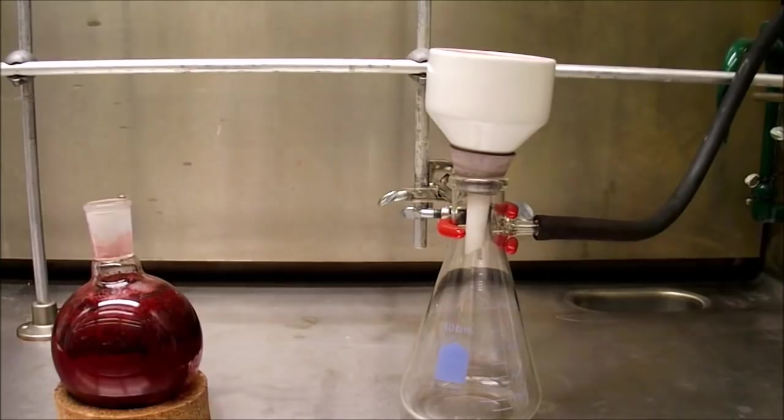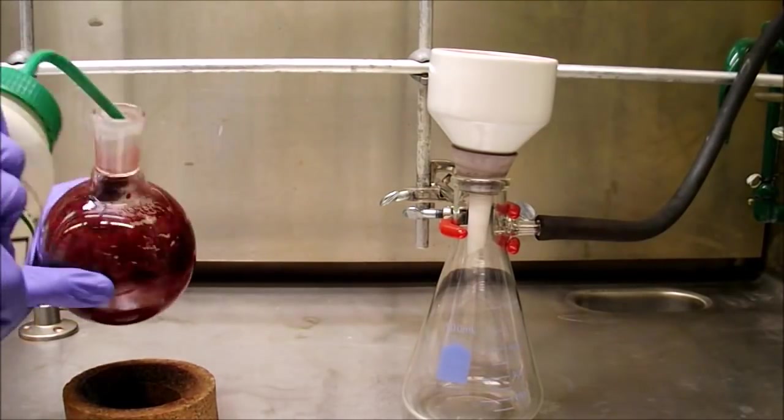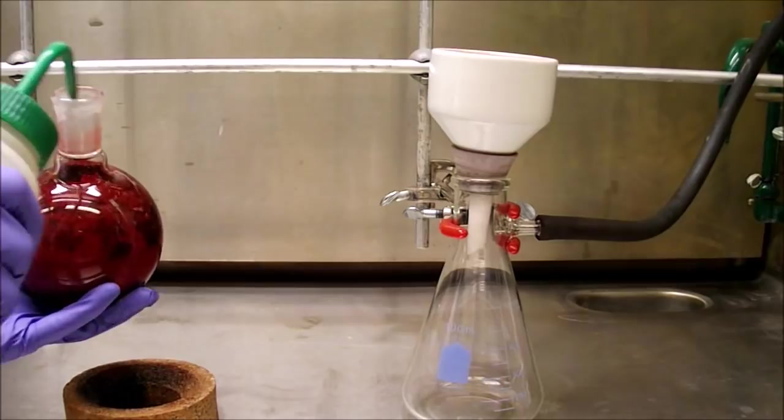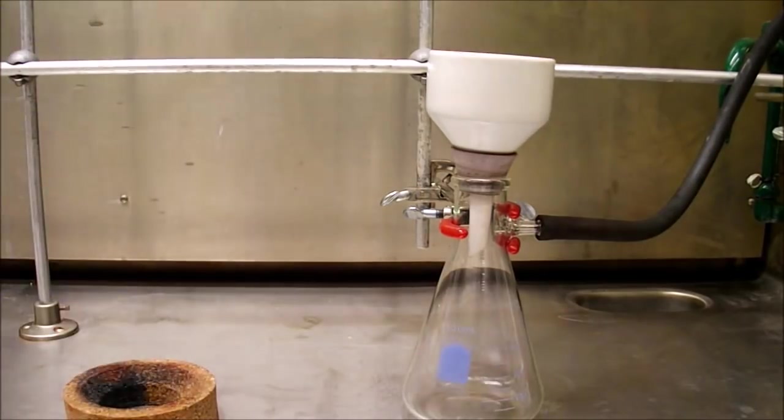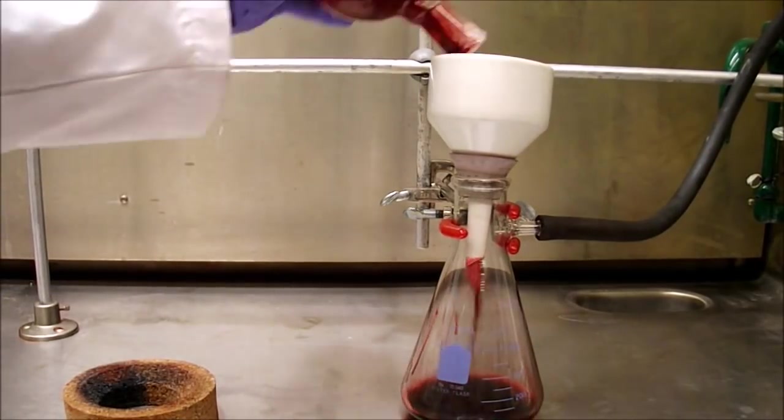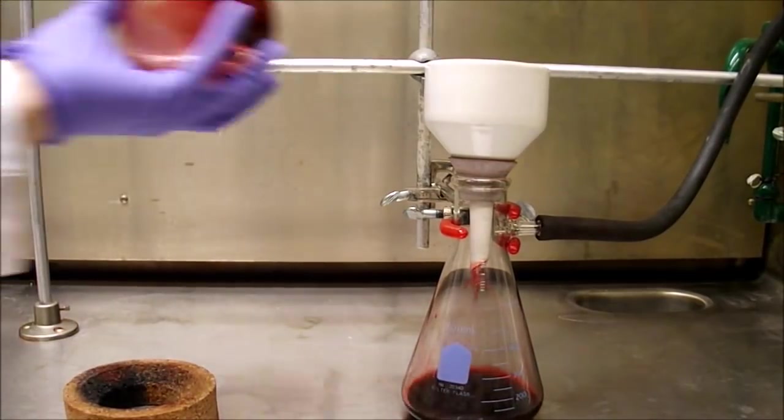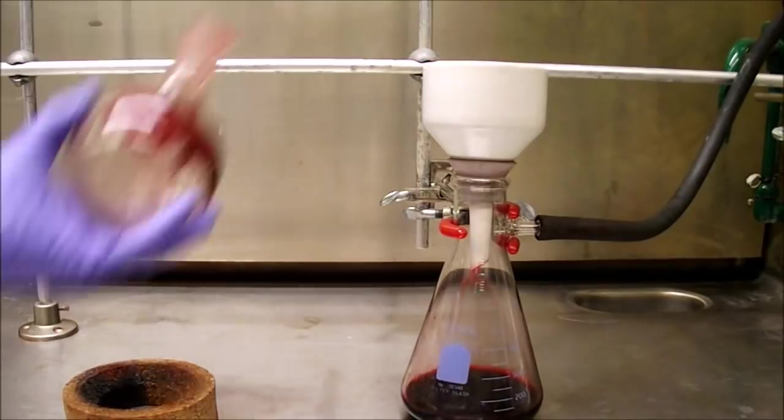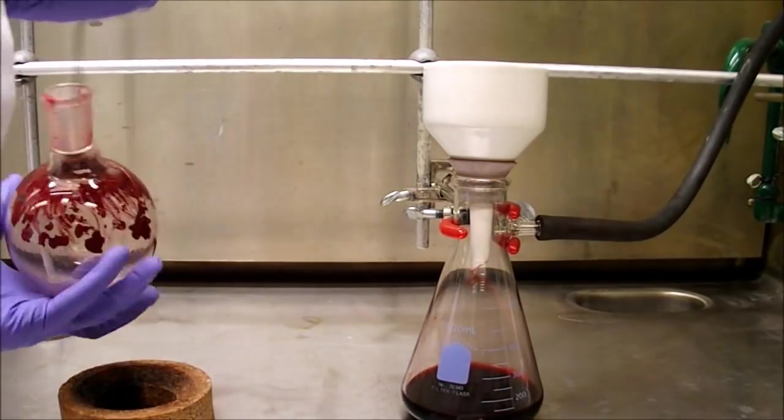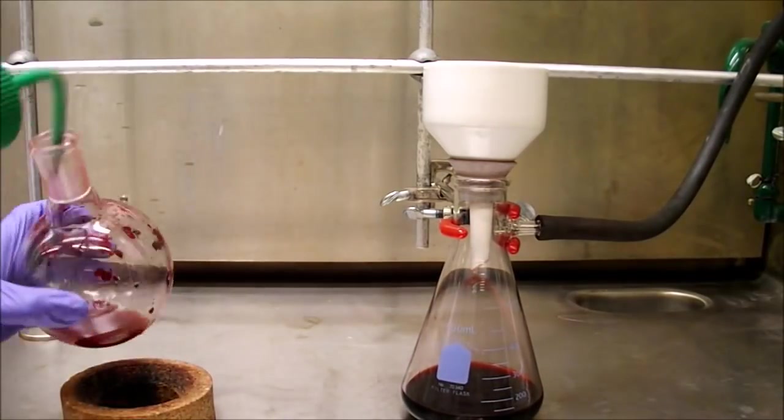The solvent was then removed on the Rotavap. The product was filtered using methanol to transfer. Methanol was also used to wash the round bottom flask, Buchner funnel, and product. Again, the red in solution represents only a small loss. It just looks dark due to the high absorption that is characteristic of PDI-based compounds.